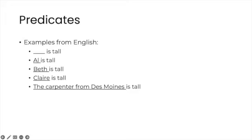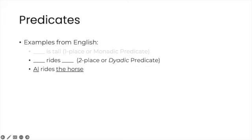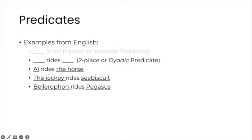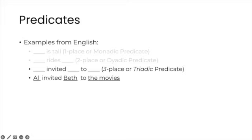The predicate RIDES, in one of its uses at least, has two places, one for the rider and the other for whatever it is that is being written. So it is a two-place or dyadic predicate. We also have three place predicates in English, which accordingly are called triadic predicates. An example of this is X invites Y to Z, as in AL invited Beth to the movies.